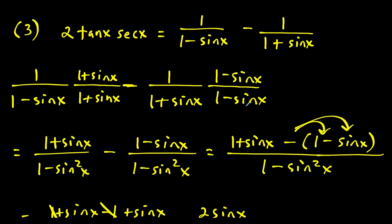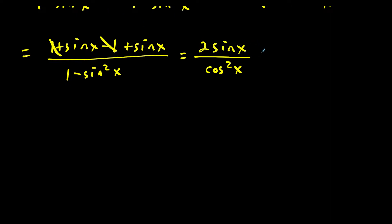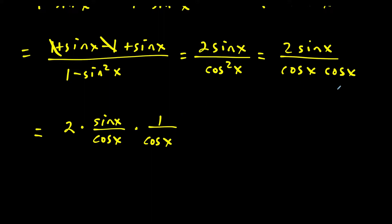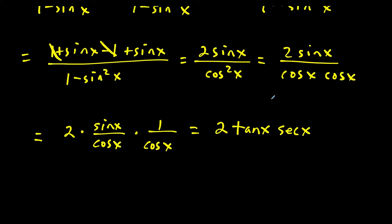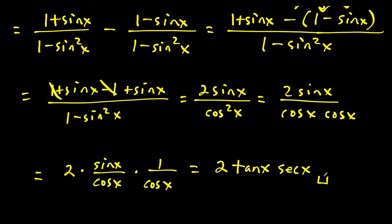We want to show this equals two tangent x secant x. Since we have fractions with only multiplication and division, we can split two sine x over cosine squared x as two times (sine x over cosine x) times (one over cosine x). Using identities, sine x over cosine x is tangent x and one over cosine x is secant x, giving us two tangent x secant x — which wraps up the verification for this question.